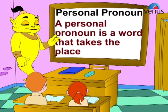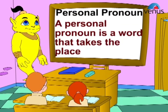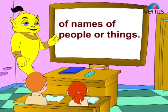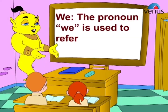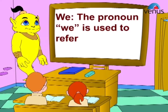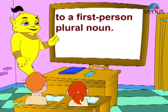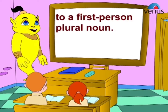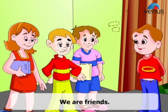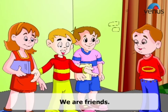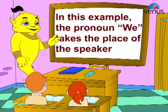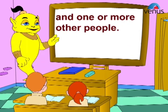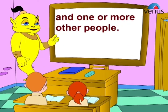A personal pronoun is a word that takes the place of names of people or things. The pronoun 'we' is used to refer to a first-person plural noun. Example: We are friends. In this example, the pronoun 'we' takes the place of the speaker and one or more other people.